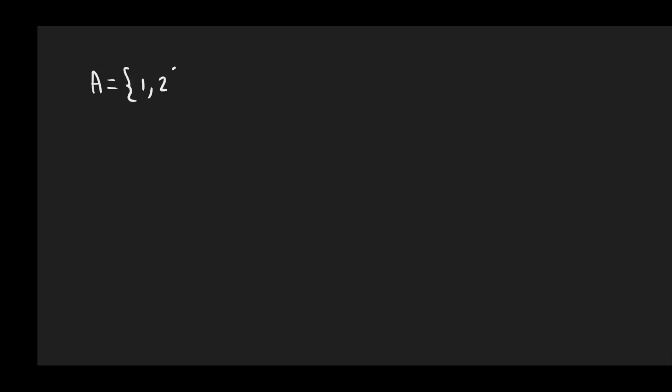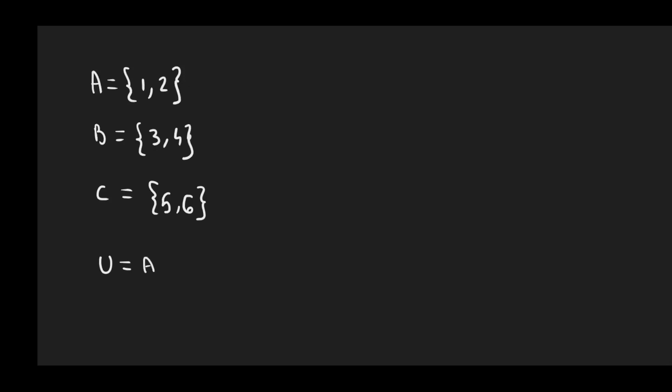So how can we find the universal set and the complement of a given set? Let's start with the universal set. The universal set is the union of all possible sets. So let's say we have set A = {1, 2}, set B = {3, 4}, and set C = {5, 6}. So the universal set is going to be the union of all possible sets.